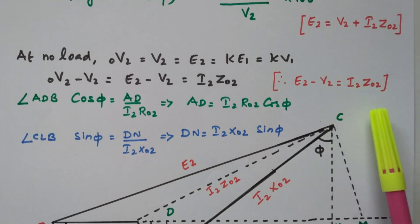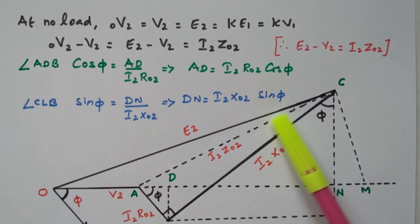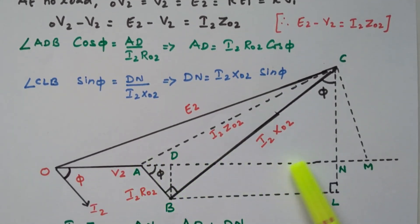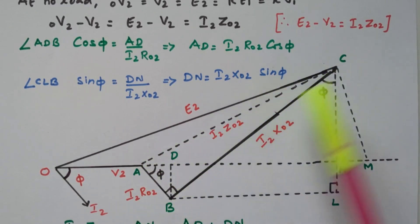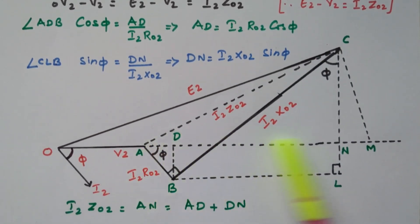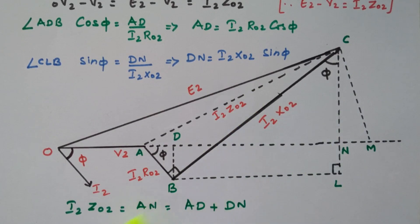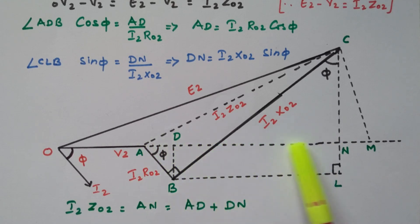How do we find I2·Z02? From the diagram, I2·Z02 is the distance An. An is split into two parts: Ad plus Dn, because we can measure Ad and Dn easily from the diagram. So An is rewritten as Ad plus Dn. Points on the diagram are labelled: O, A, D, N, M, L, B, and C.